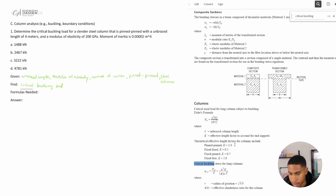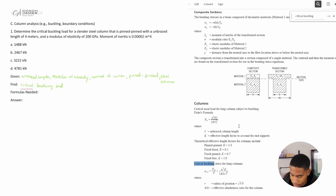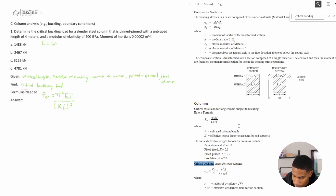The formula also includes K — the effective length factor to account for end supports. The theoretical effective length factors for columns include pinned-pinned, fixed-fixed, fixed-pinned, and fixed-free. We have pinned-pinned, so K equals one. L is the unbraced column length, which is four meters. So the full formula is: PCR = π²EI / (KL)².